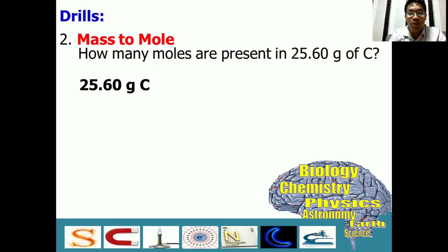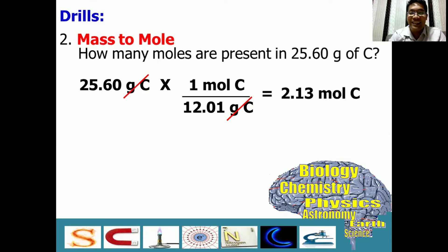And then, we have to multiply it with 1 mole. And we know that 1 mole of carbon is always equal to 12.01 grams. Now, we have grams in the numerator and grams in the denominator. So, we can cancel them out. And we will just divide 25.60 by 12.01. And the result is, you are right, 2.13 mole carbon.